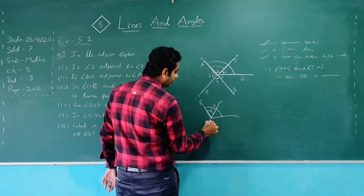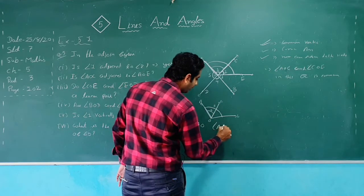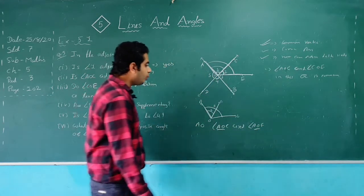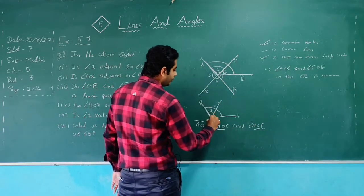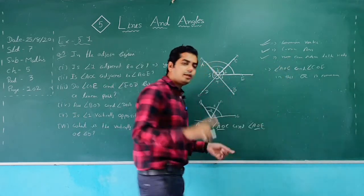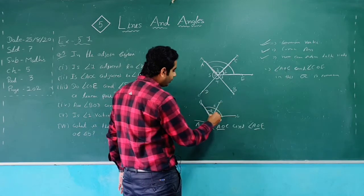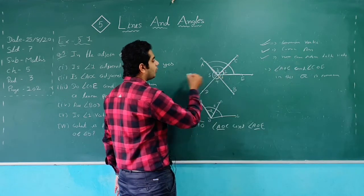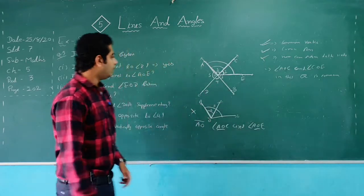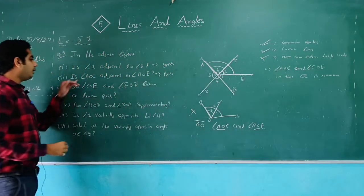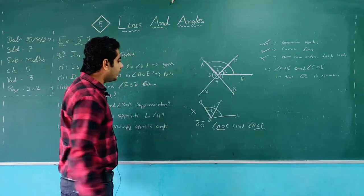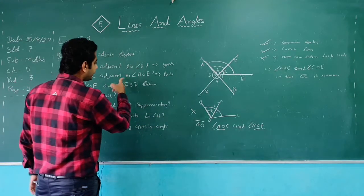But the third condition — non-common arms on either side of the common arm AO — is not fulfilled. OC is on one side, but there is no non-common arm on the other side of AO. So the third condition is not fulfilled, and the answer is no: AOC is not adjacent to AOE, because the non-common arm on either side of the common arm condition is not satisfied.